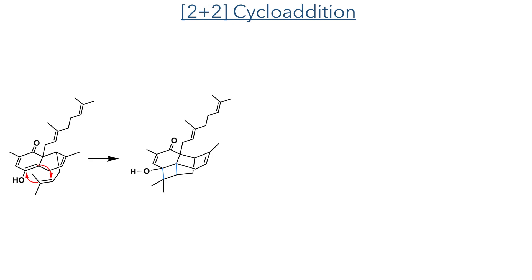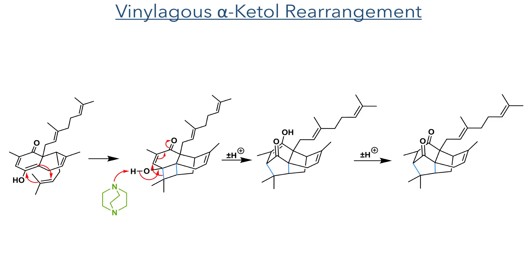There are two mechanisms proposed for this reaction. The first starts with a [2+2] cyclization between the enol and the alkene, followed by a vinylogous alpha-ketol rearrangement. In this reaction, the alcohol is deprotonated, and this triggers the migration of a carbon-carbon bond, expanding the four-membered cyclobutane into a five-membered ring, together with the formation of an enol that can then tautomerise back to a ketone.